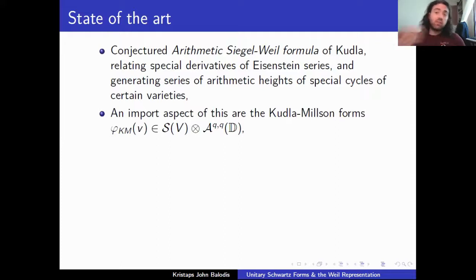So we have this analytic function, which is giving us geometric information. That's what this formula is saying, in some sense. And an important aspect of this is the construction of these special forms. So they live in this tensor space where we're taking the tensor of the Schwartz functions on φ, and we're tensoring them with the differential forms on our manifold D. In particular, the (q,q) refers to the fact that these are complex differential forms.